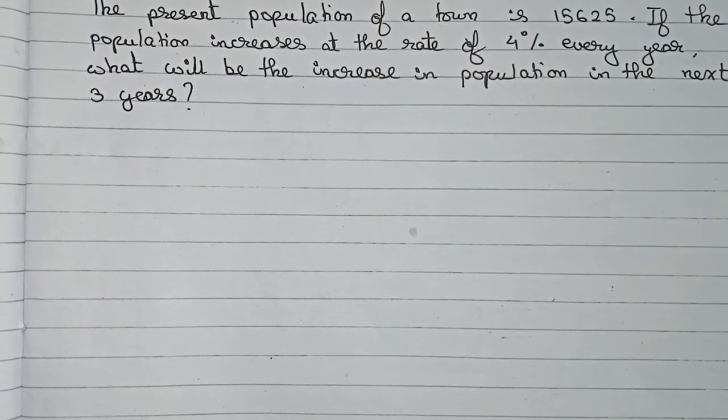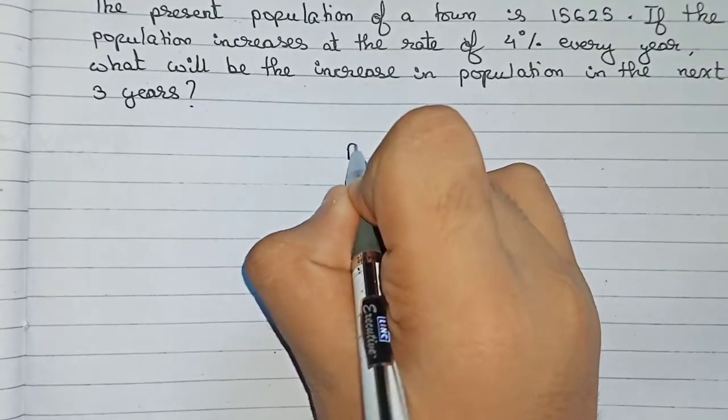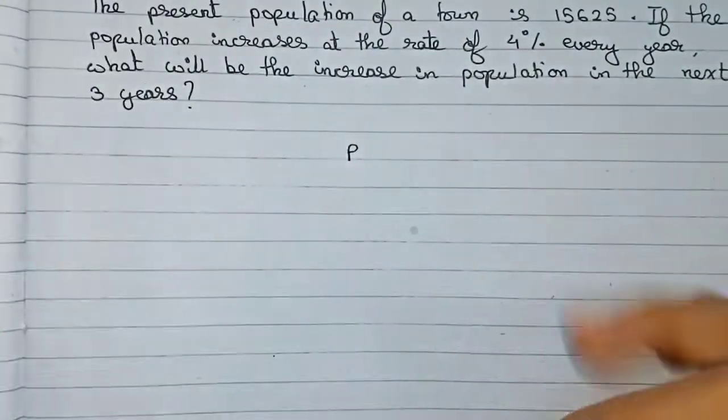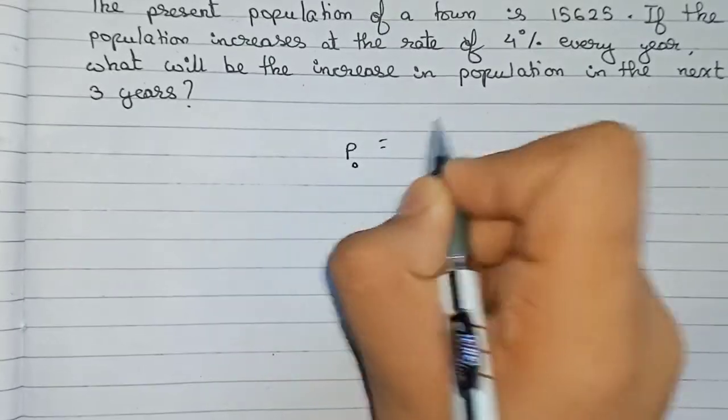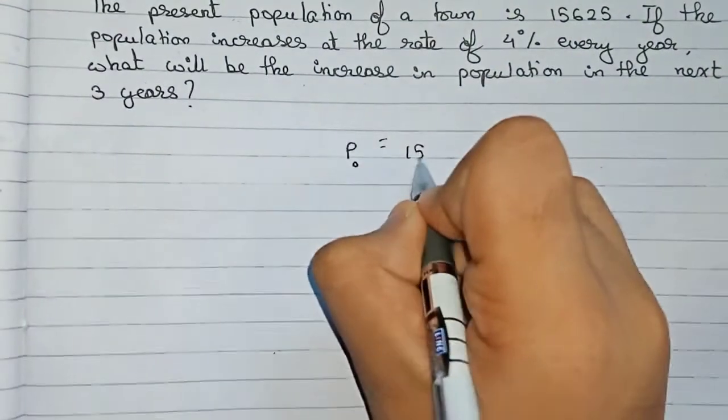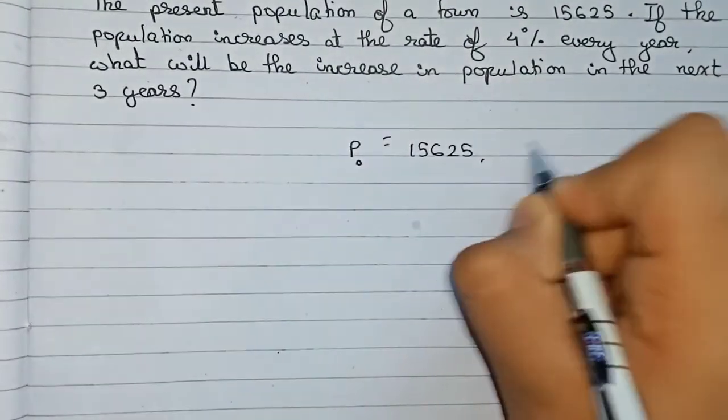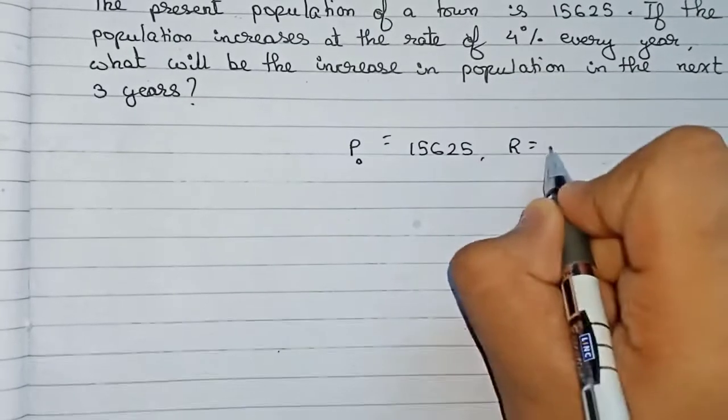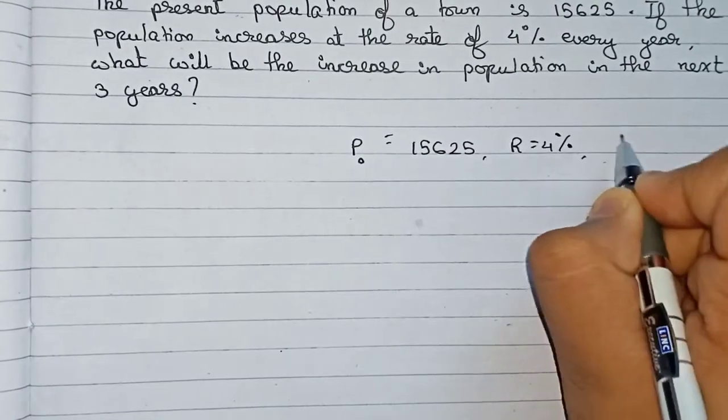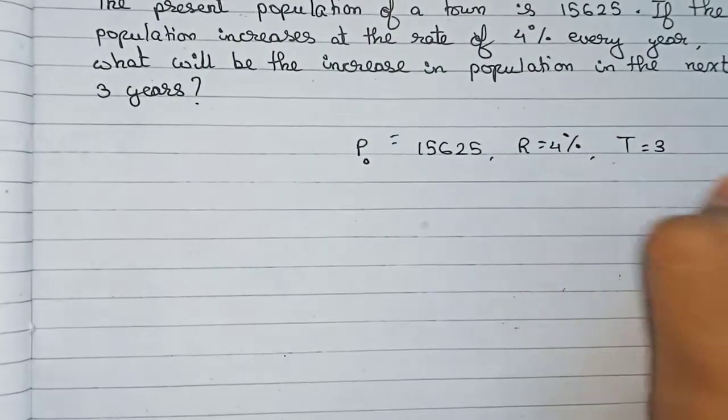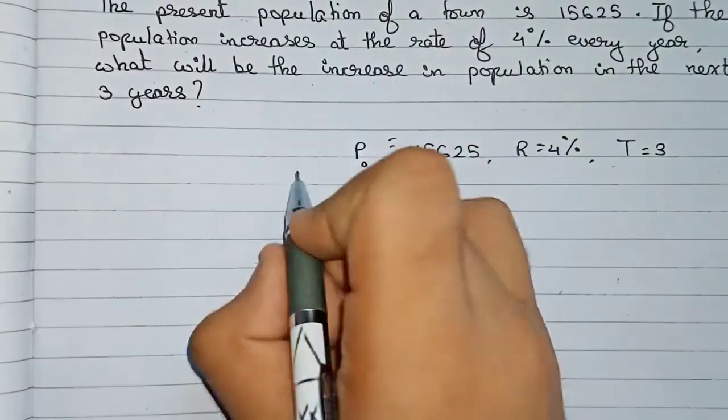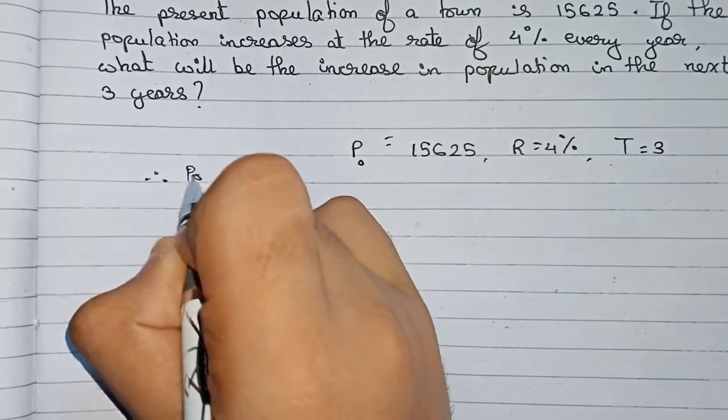First, let's note the information that has been given. First, our principal - in population-based questions, you have to use principal P = 15,625. The rate of interest is given as 4% every year, and the time is given as 3 years, so T = 3. Therefore, we write that the population after 3 years is equal to...